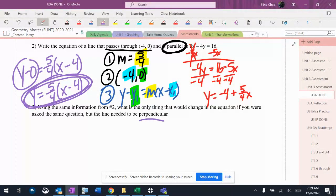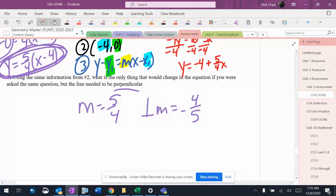So instead of parallel, it'd be perpendicular. The slope was 5 over 4, so the perpendicular slope would be flip it and change the sign, so negative 4 over 5.